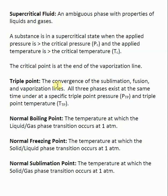The triple point is where all three phase change lines — sublimation, fusion, and vaporization — converge. It's the central point on a phase diagram, and it means that at a specific pressure and a specific temperature, all three phases — solid, liquid, and gas — can exist at exactly the same time.